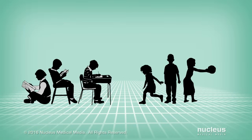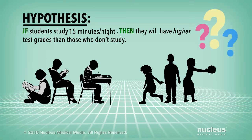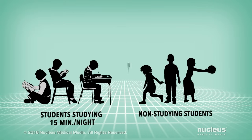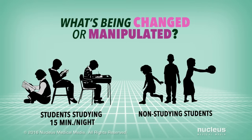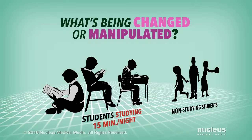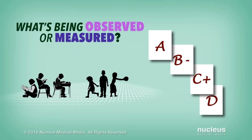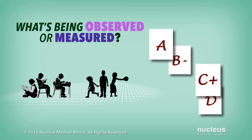Let's look at a few examples. Suppose your hypothesis is that if students study 15 minutes a night, then they will have higher test grades than those who don't study at all. What's being changed or manipulated? It's whether or not the students study for 15 minutes. And what's going to be observed or measured in this experiment? What do you think might be different as a result of this increased study time?